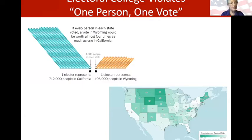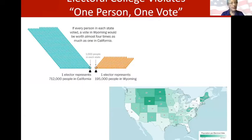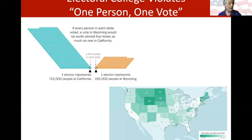Why does the League of Women Voters take the position to abolish the Electoral College? It comes down to the concept of one person, one vote. For example, California's population is almost 68 times larger than Wyoming's, but it only gets about 13 times as many electors, because electors are based on the number of senators and representatives from each state. In California, we share our representative's attention with 712,000 other people, where in Wyoming they share with around 125,000. The lighter the color on this map, the weaker our voice to our House members and to the elector who represents our vote for president.